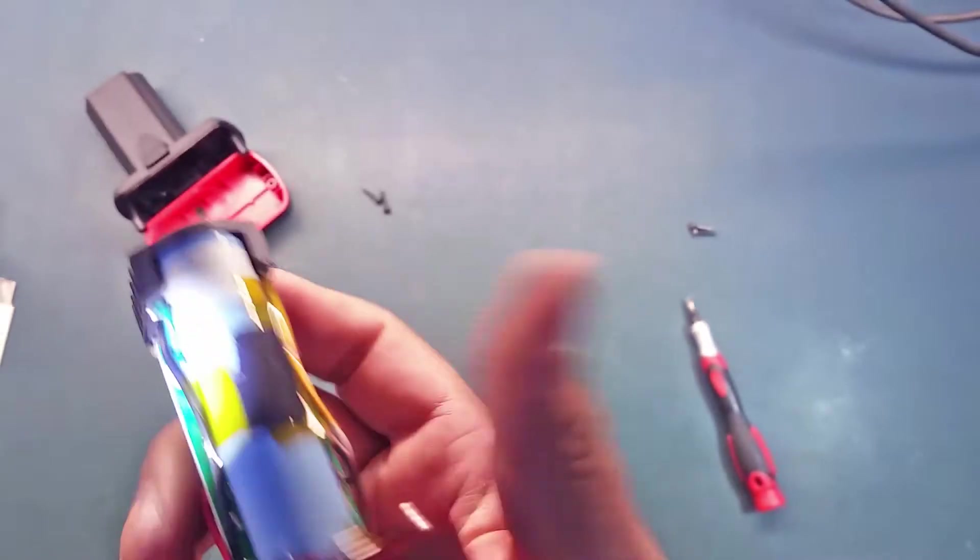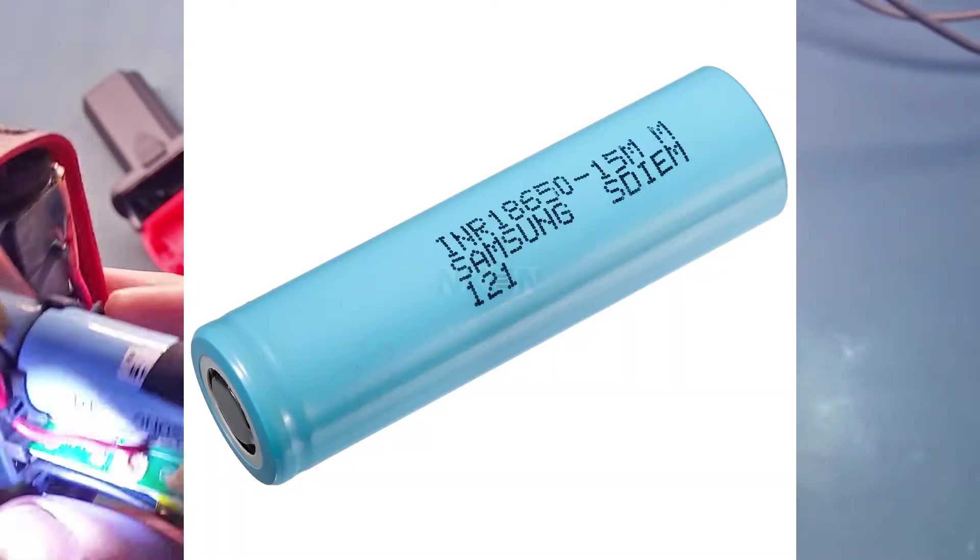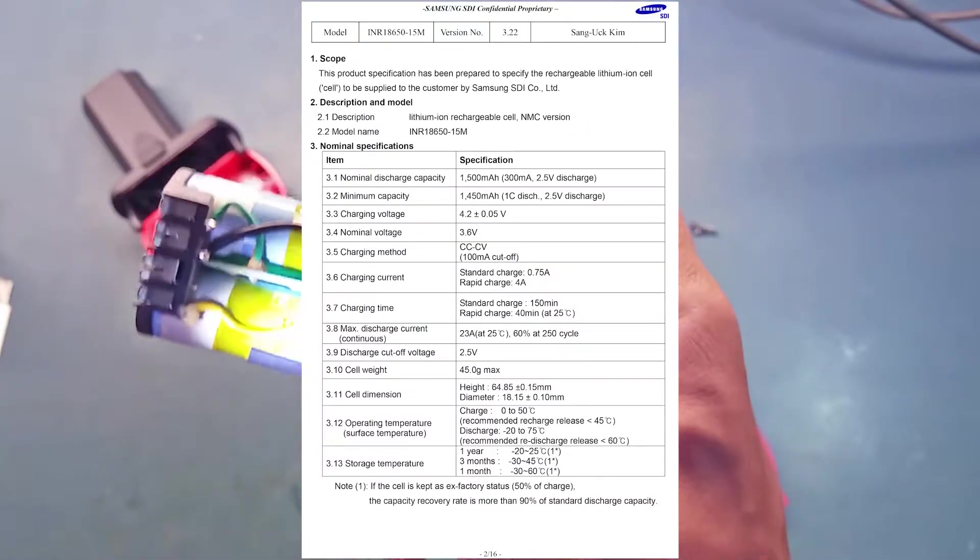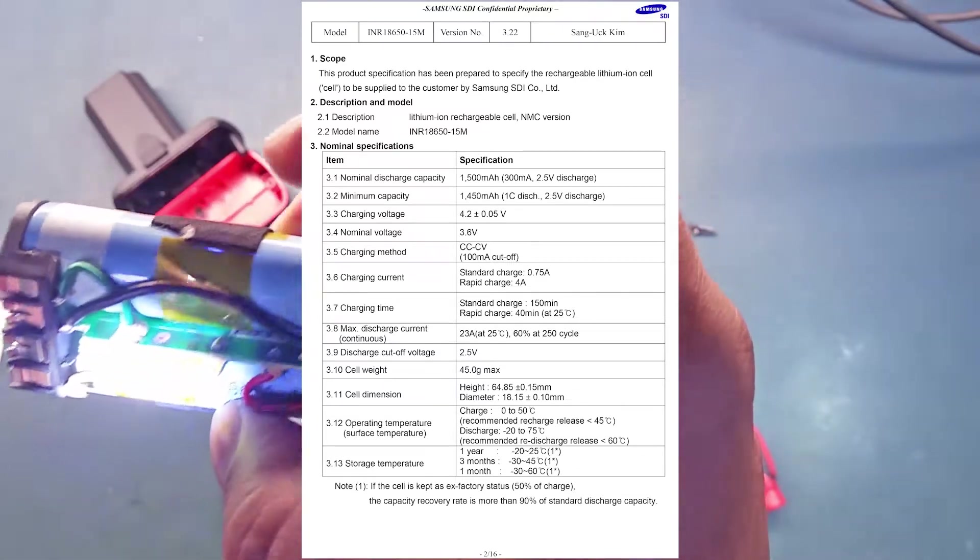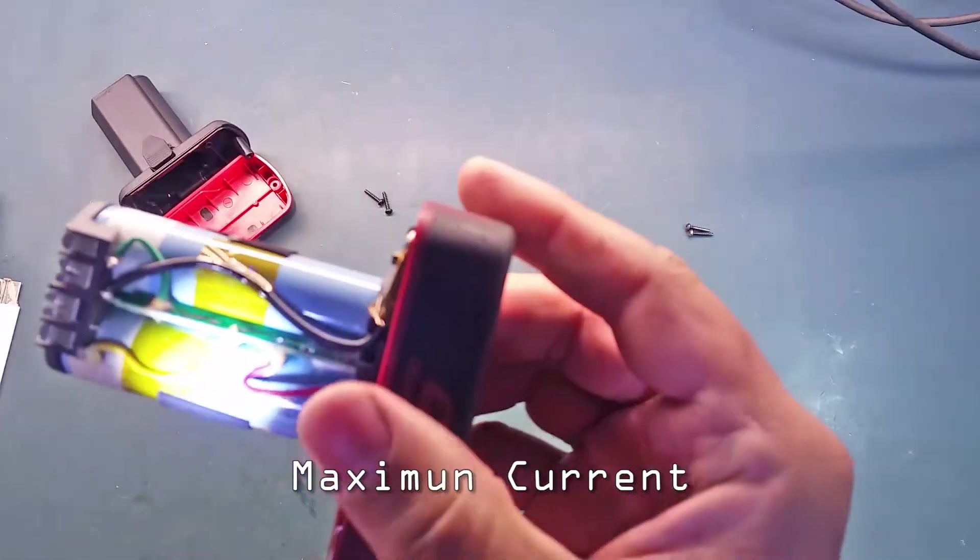These are Samsung branded cells, model INR 18650-15M. These are 1.5 amp hours, 23 amp cells.